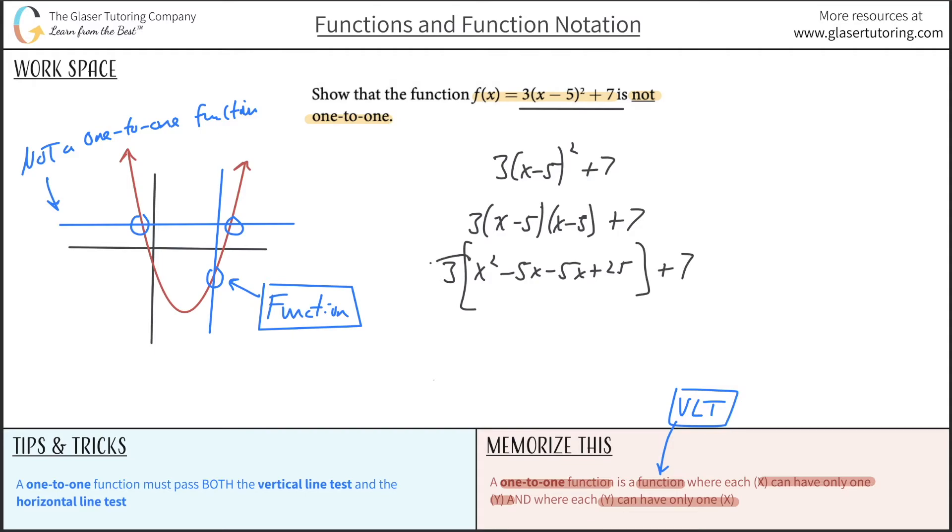I can now distribute the 3 to each term. So this is going to be 3x². I can combine like terms if I want. Let me not combine any like terms yet. So this is minus 15x, minus 15x. This is then going to be plus 75 and then plus 7.